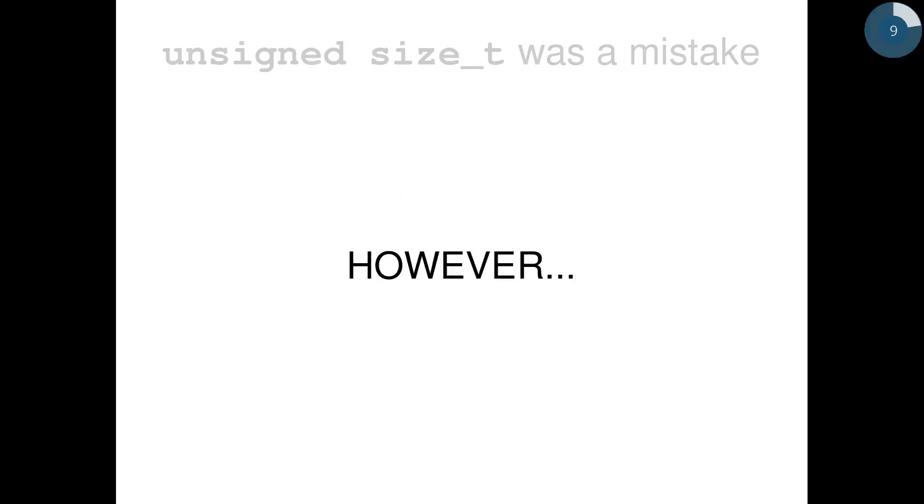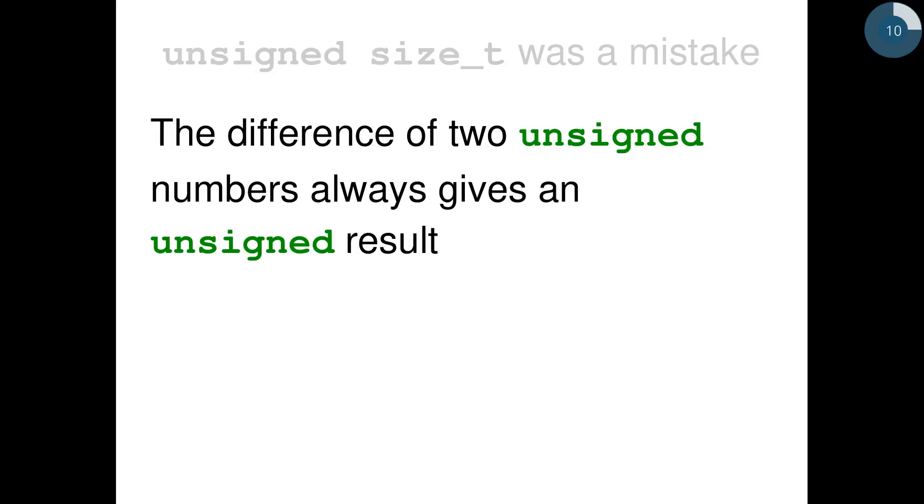However, with C++ unsigned types, things are different. For example, in C++, the difference of two unsigned numbers always gives us an unsigned result.